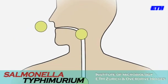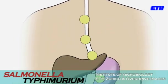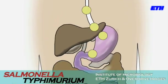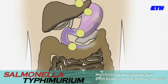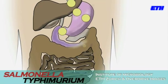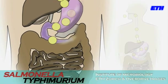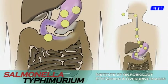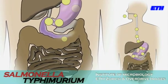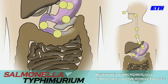After ingestion, the bacteria travel through the alimentary system. Most of the bacteria are usually killed by the acidic conditions in our stomach. However, a few bacteria may survive and are then transported to the intestine.